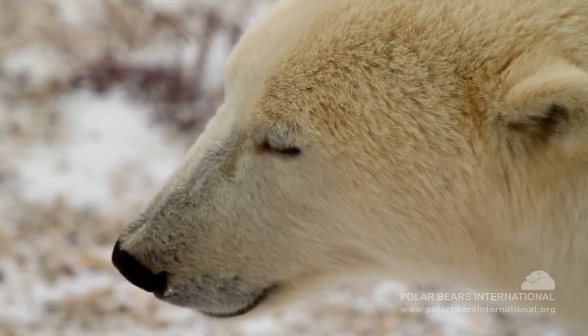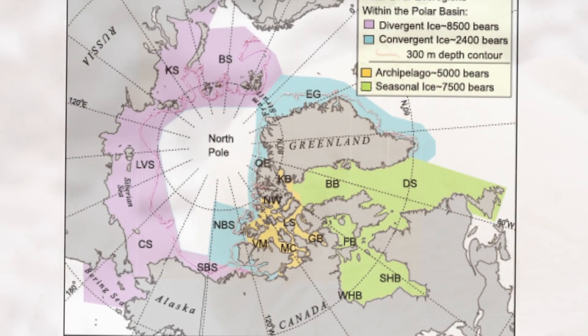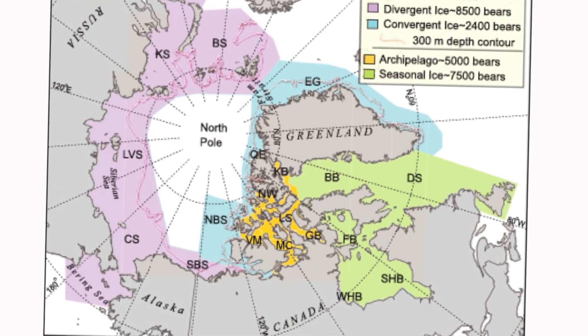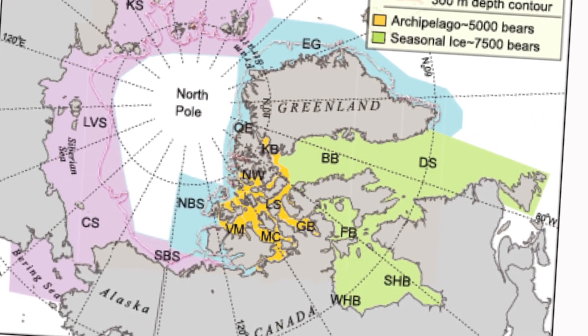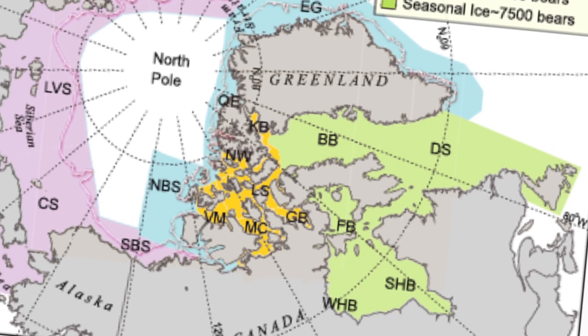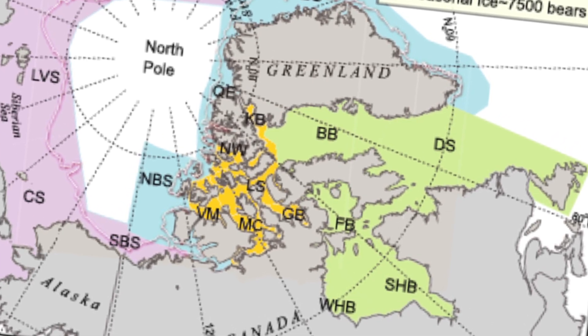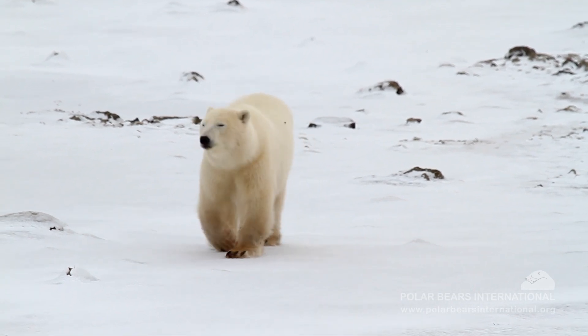North of here in the Canadian archipelago there's what I call the archipelago ecoregion. That's the channels between the high Canadian Arctic islands and adjacent Greenland, and those channels are choked by sea ice year round. So the polar bears there have access to ice all the time — they don't have to come ashore. They spend their life out on the sea ice.